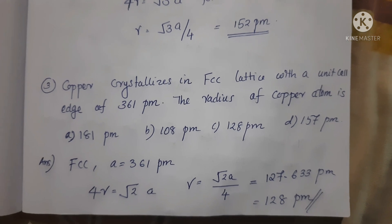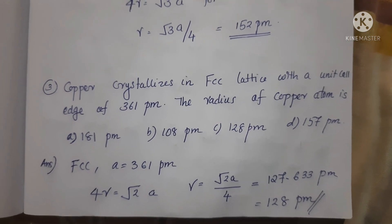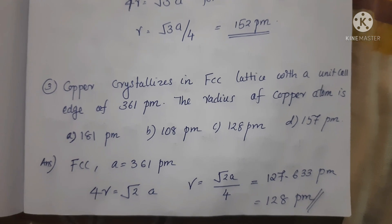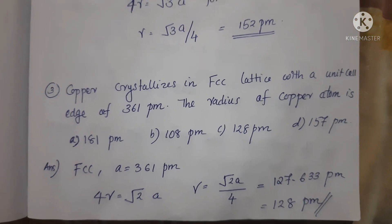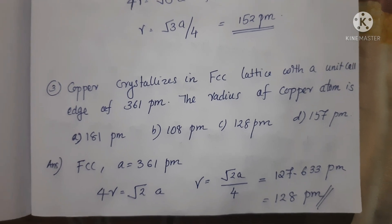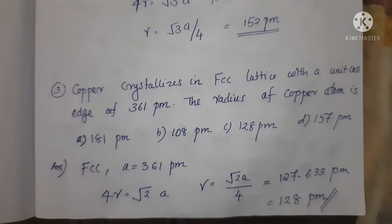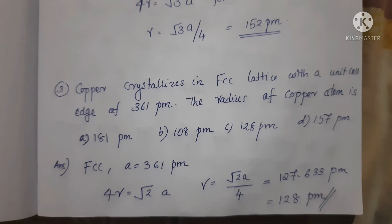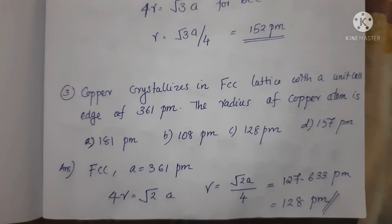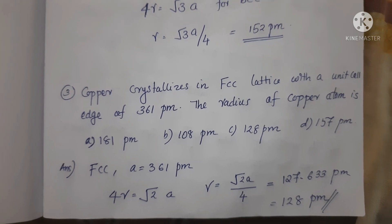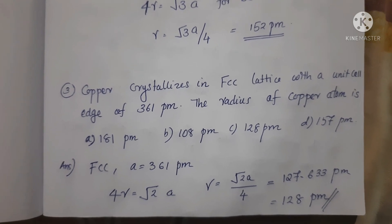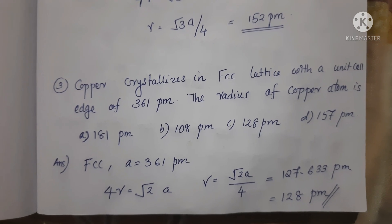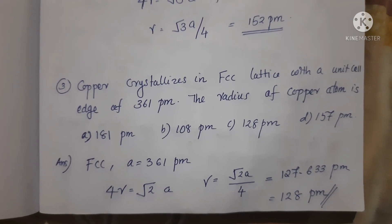For an FCC structure, R = √2·A / 4. Substituting the edge length value, we get R = A / (2√2). Solving, we get 127.63 picometers, approximately 128 picometers. Option C is the correct answer.